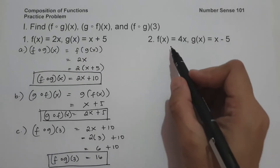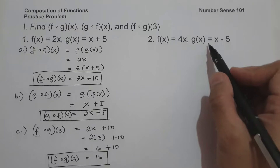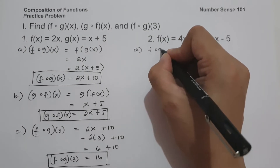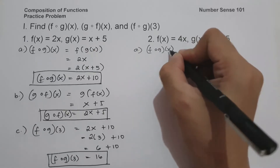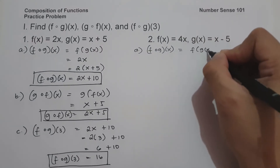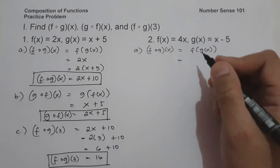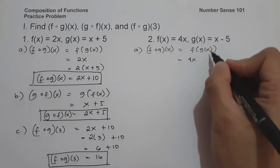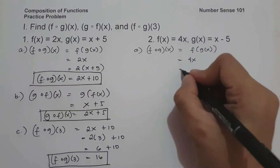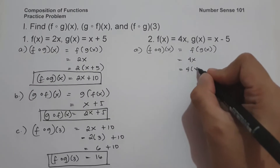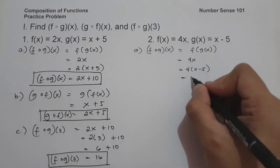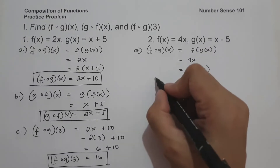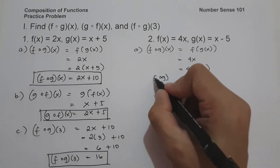On number 2, f of x equals 4x and g of x equals x minus 5. Let us have f circle of g of x, and that is f of g of x. The value of f of x is 4x, and the value of x is g of x, which is x minus 5. So that is 4 times x minus 5, giving us 4x minus 20. And this is f circle of g of x.